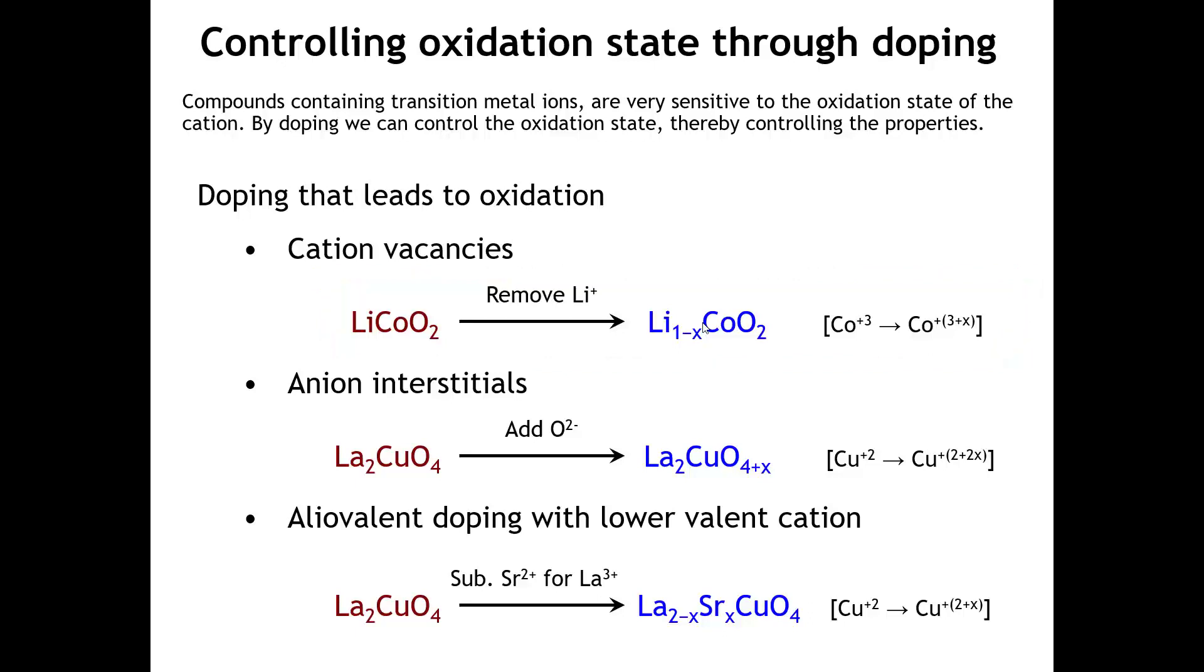We get the same kind of effect when we add anion interstitials, because once again, we don't have enough positive charge to maintain neutrality. If you take lanthanum-2-copper-O4, the original host structure for the cuprate high-TC superconductors, and add oxygen interstitials, the copper oxidation state must increase from plus 2 to something higher, depending on the level of anion interstitials—we might push it up to 2.2 or 2.3. When we change the copper oxidation state in that way, we can turn on superconductivity in this compound.